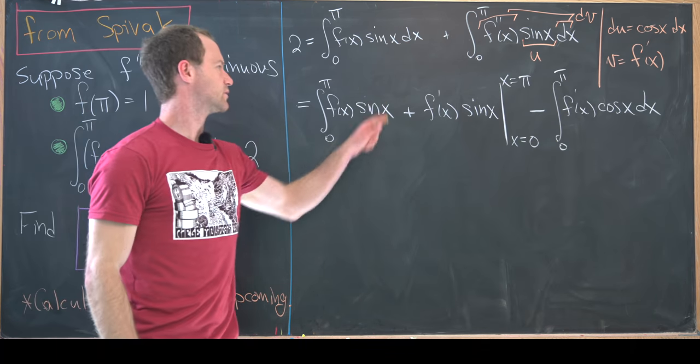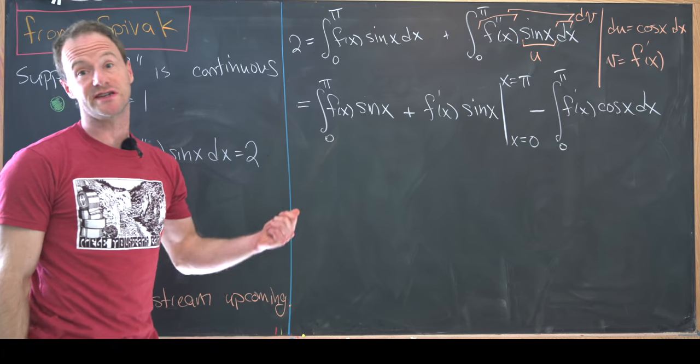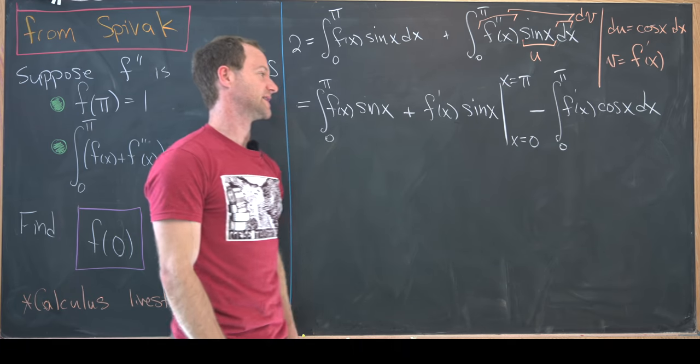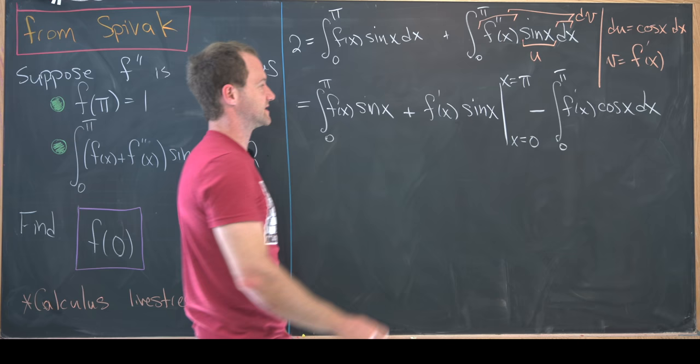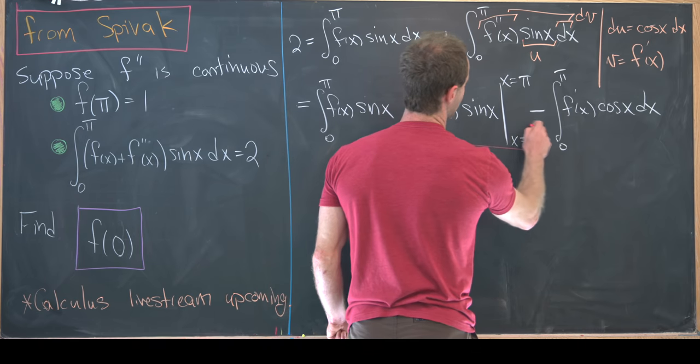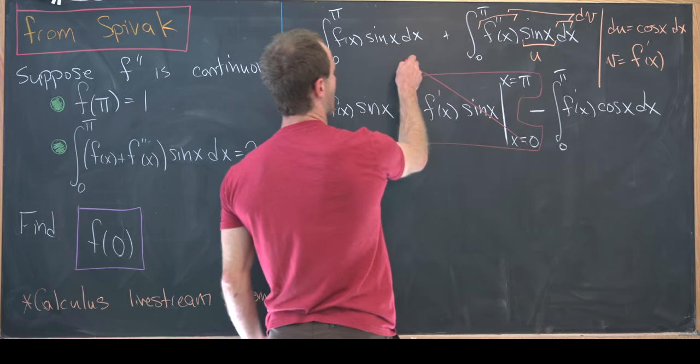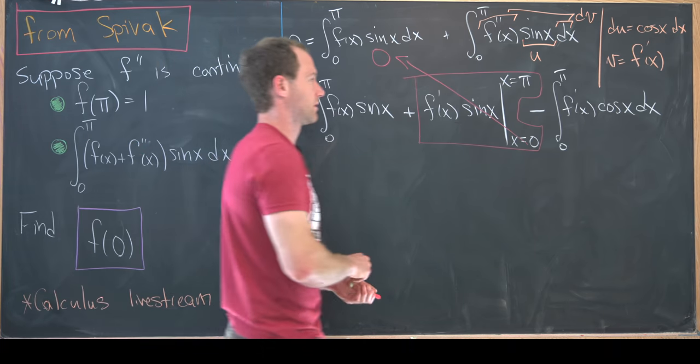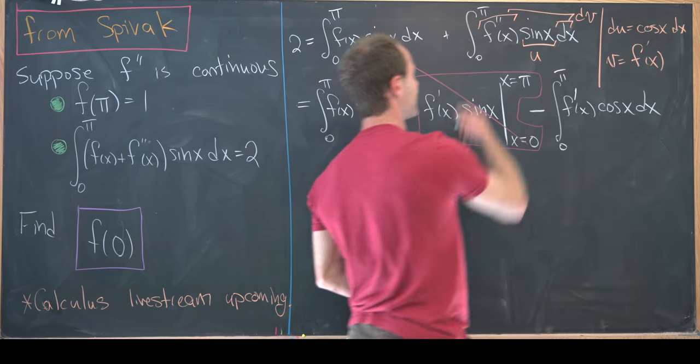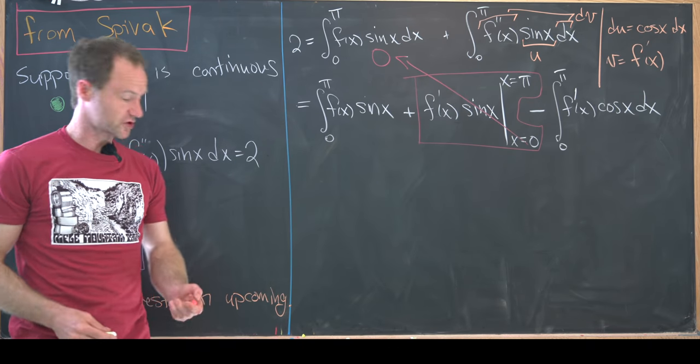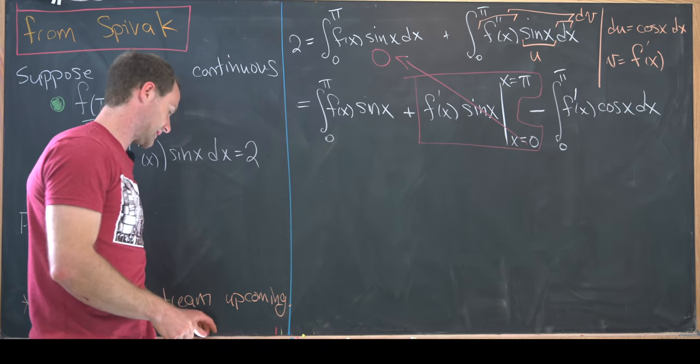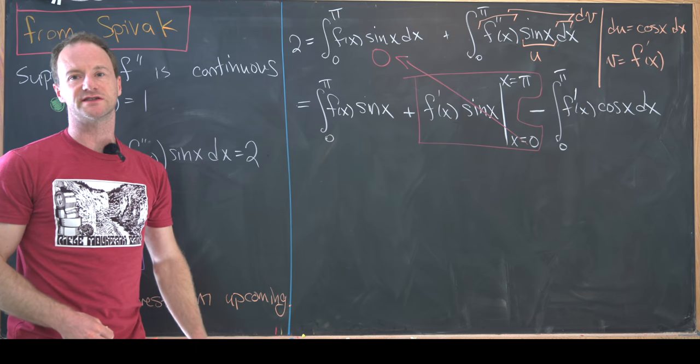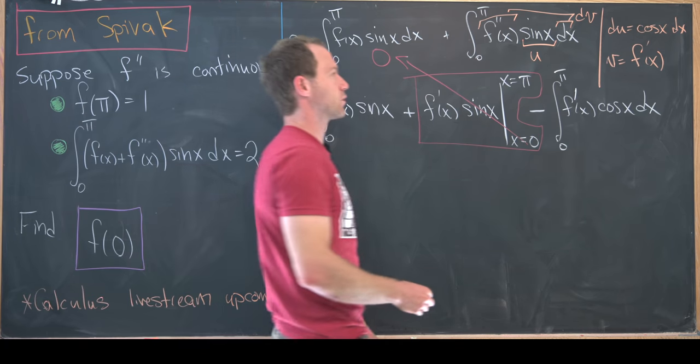Notice that this bit which has been evaluated will just turn into zero because sin(π) is zero and sin(0) is zero. So all of this stuff just turns into zero, and then we've got another integral which looks kind of like the one that we started with but we have a first derivative instead of a second derivative. That really motivates the use of integration by parts one more time.